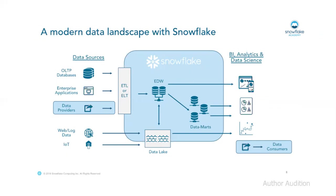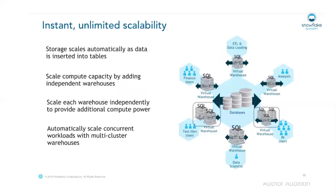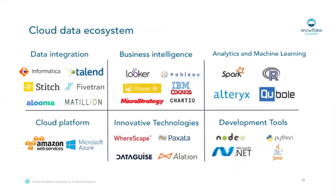Snowflake has unlimited scalability — not only in terms of compute instances but also as data grows, storage automatically scales up. It supports both vertical scaling, which means adding CPU and memory to compute instances, and horizontal scaling, which means adding machines to the compute cluster. There is no manual intervention required; Snowflake automatically manages all of this.